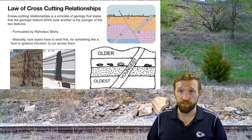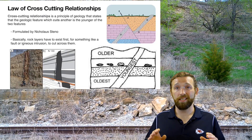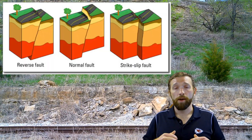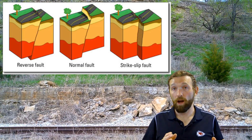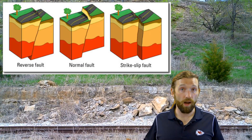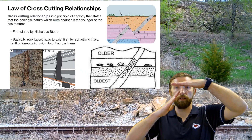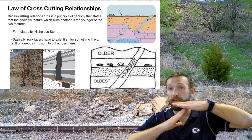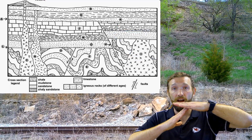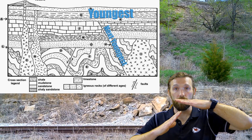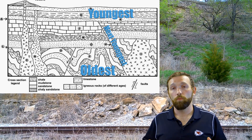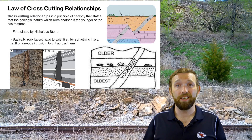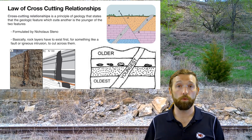You can also use this same rule for fault lines. A fault is any time rock layers are broken and pushed up against each other. If a fault cuts through rock layers, that fault is younger than the rock layers. If that fault cuts through all the layers below but stops, and the rock layers above the fault have not been cut, then those top layers are the youngest, the fault is next youngest, and the faulted rock layers below are the oldest. We use cross-cutting relationships to get another relative age of what we're looking at.